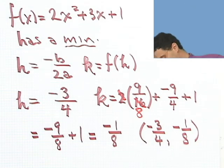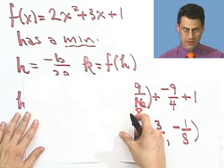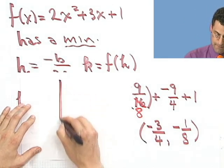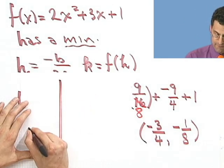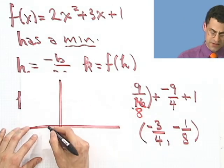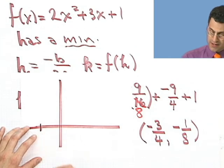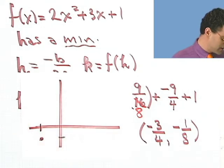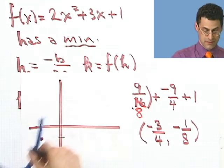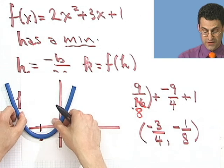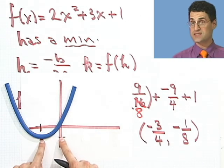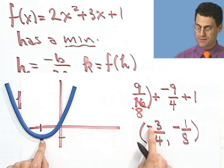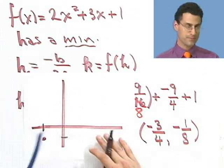So visually, what I see is that at x = minus 3 fourths and y = minus 1 eighth, that's where the minimum is. The lowest value is minus 1 eighth — that's the y value — and the location of it is minus 3 fourths. There's a minimum there.